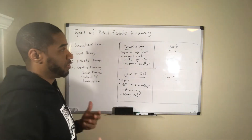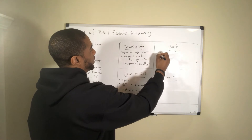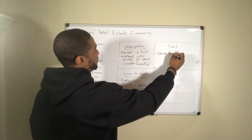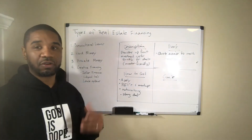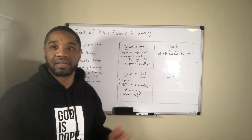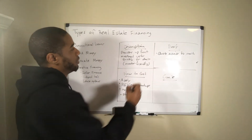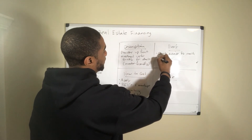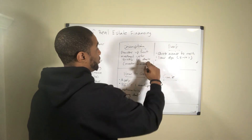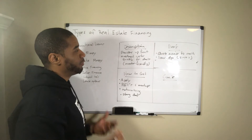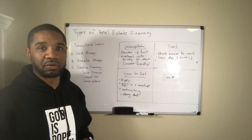The pros of hard money lenders: they are quick — quick access to cash. If you are a house flipper, time is everything because getting to the deal quickly is all that matters; someone else may beat you to the punch. There is also a low down payment — you may be looking at five to ten percent, depending on the lender, and you may even be able to do better than that. Hard money lending is one of the most convenient ways to find funds in real estate investing.